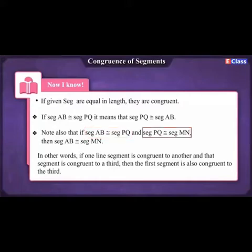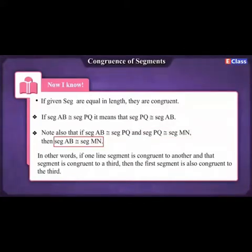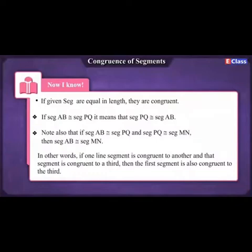Note also that if segment AB is congruent to segment PQ, and segment PQ is congruent to segment MN, then segment AB is also congruent to segment MN. In other words, if one line segment is congruent to another, and that segment is congruent to a third, then the first segment is also congruent to the third.